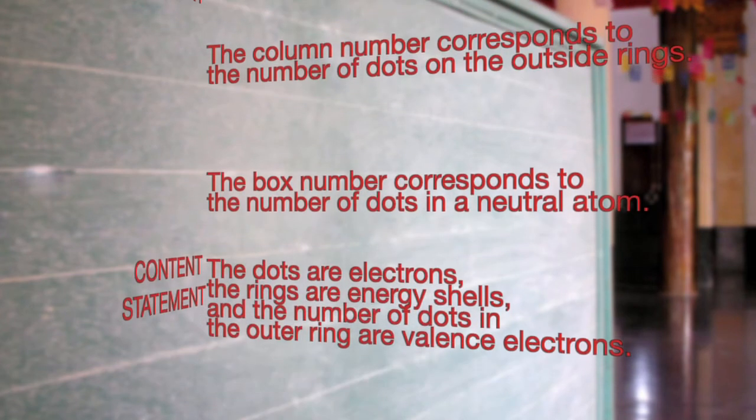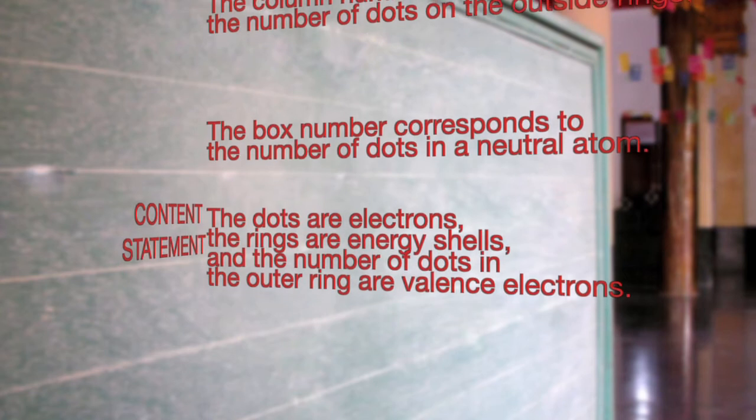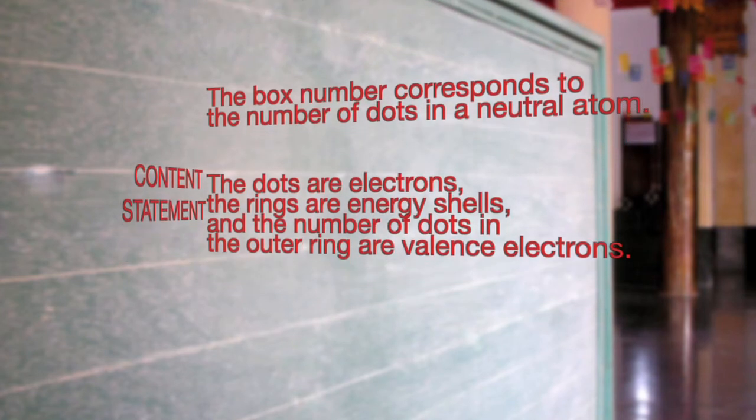The dots are electrons, the rings are energy shells, and the number of dots in the outer ring are valence electrons.